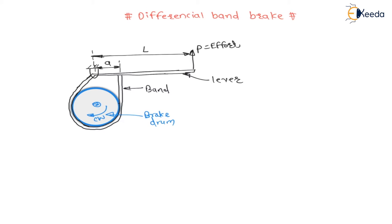Let us assume this brake drum is rotating in the clockwise direction. The direction of the arrow represents the tight side, and the tail of the arrow is the loose side. Therefore, the right side of the band is the tight side and the left side is the loose side. This side is a tight side, as per the direction of arrow.